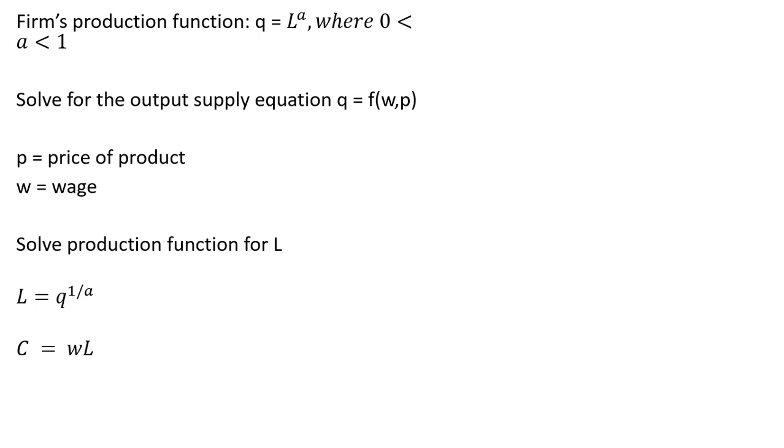We could ignore fixed costs here when we're deriving the firm's output supply equation. And so making our substitution for L as Q raised to the 1 over A power, we have this.